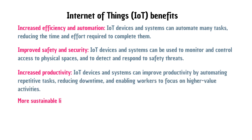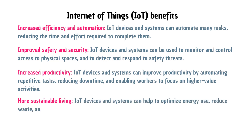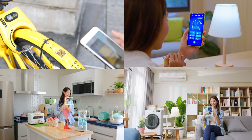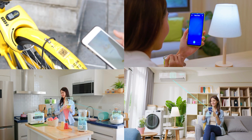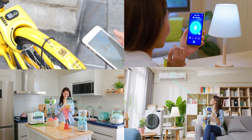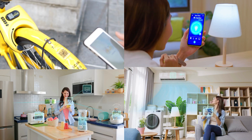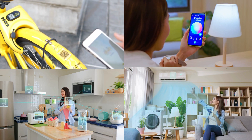More sustainable living: IoT devices and systems can help to optimize energy use, reduce waste, and promote more sustainable practices. IoT technology continues to develop, and its potential to improve our lives and solve some of the world's most pressing problems is vast.